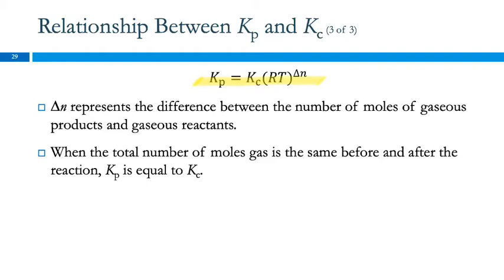So the key equation is: KP equals Kc times RT raised to the power of delta N, where delta N is the difference between moles of gaseous products and reactants. If we have the same number of moles of gas after the reaction as before, then Kp equals Kc, because all the RT terms cancel out. They don't cancel if the moles of gases aren't the same — each gas is related by a factor of RT, and when things are raised to different powers, they don't all cancel.